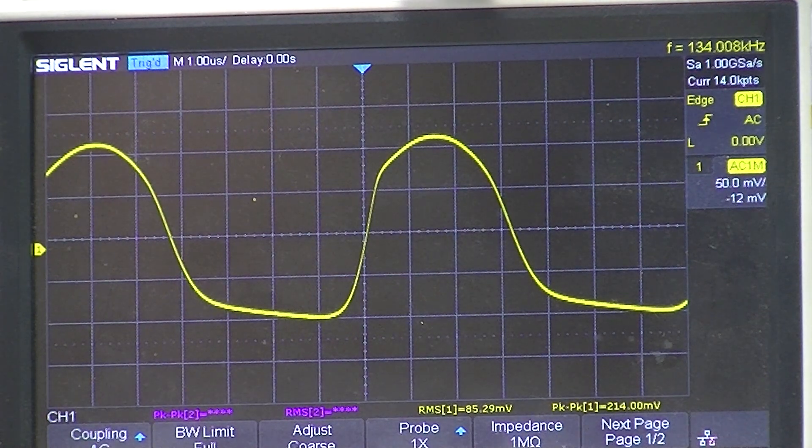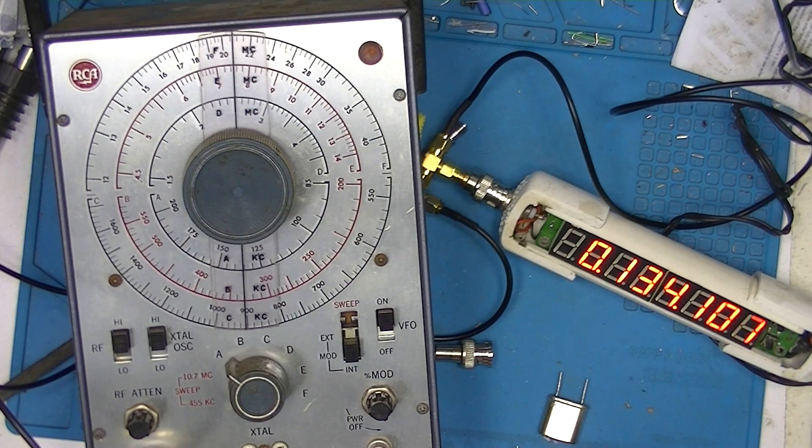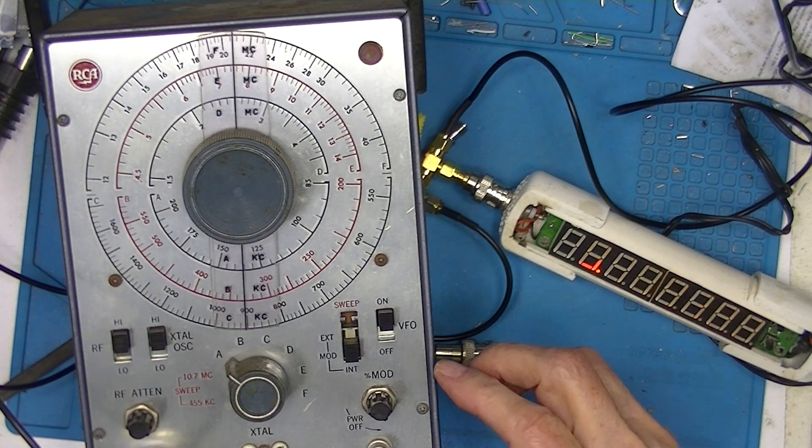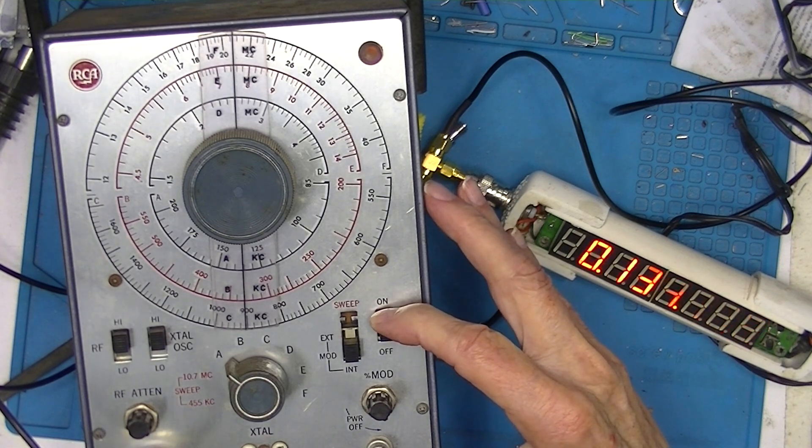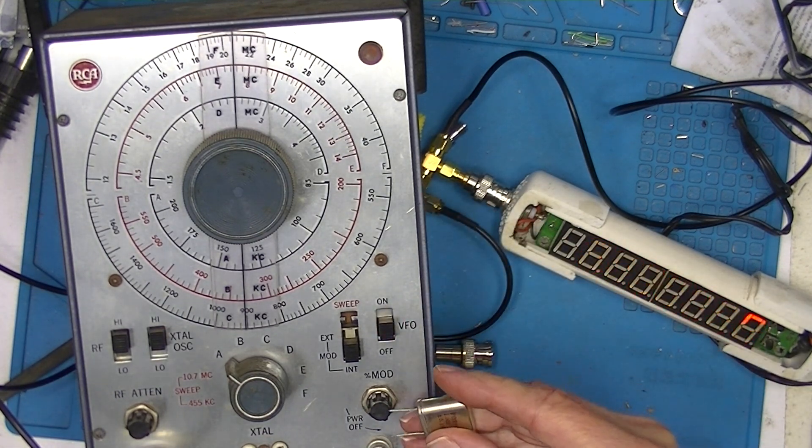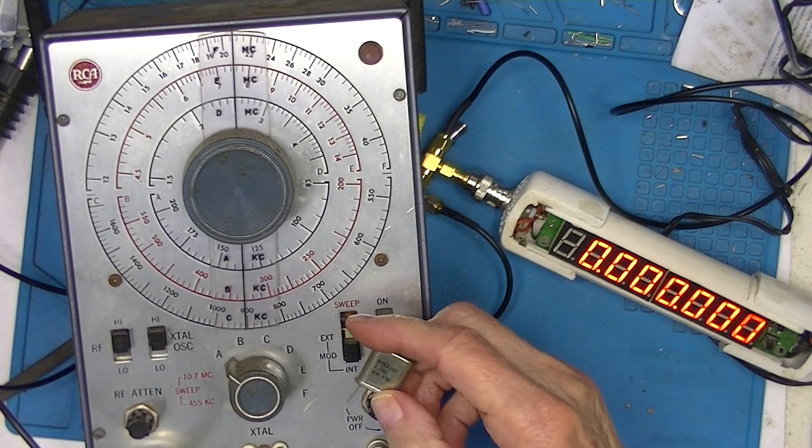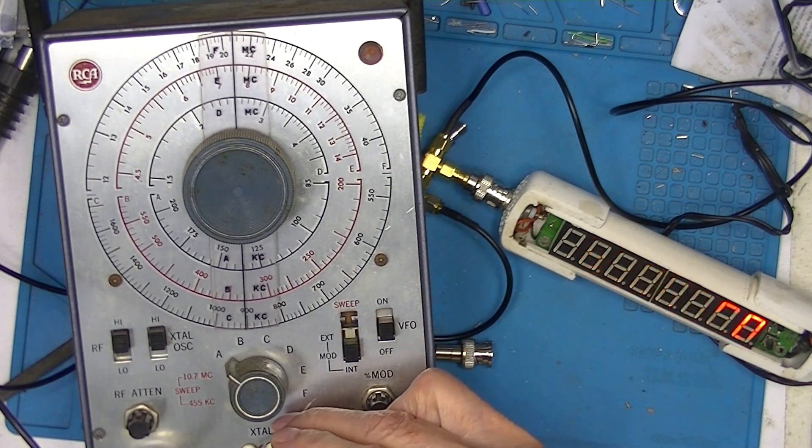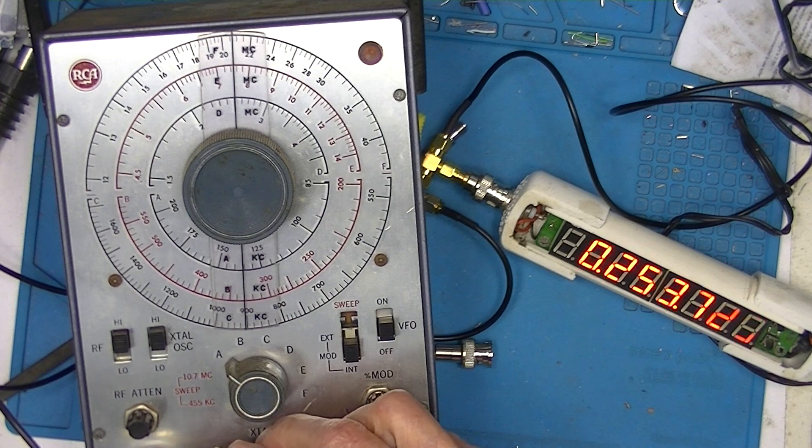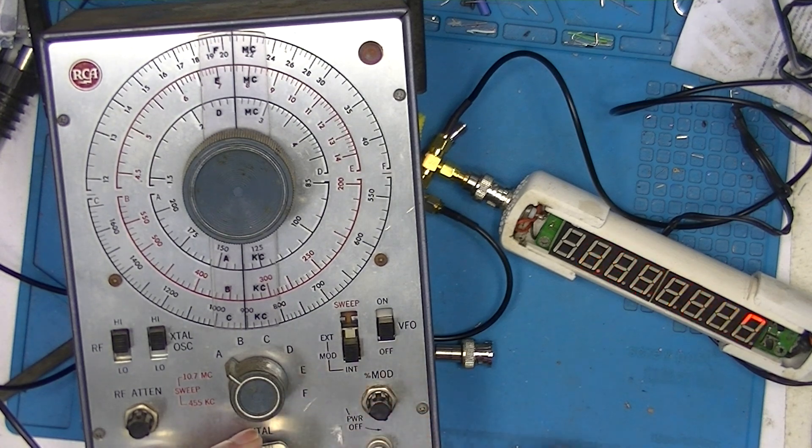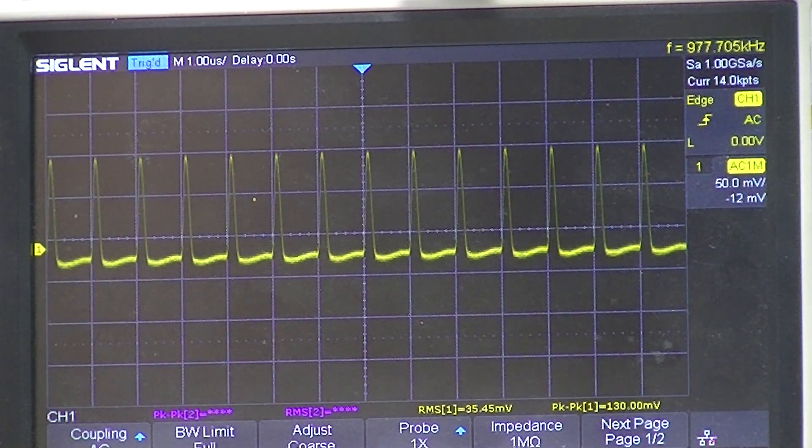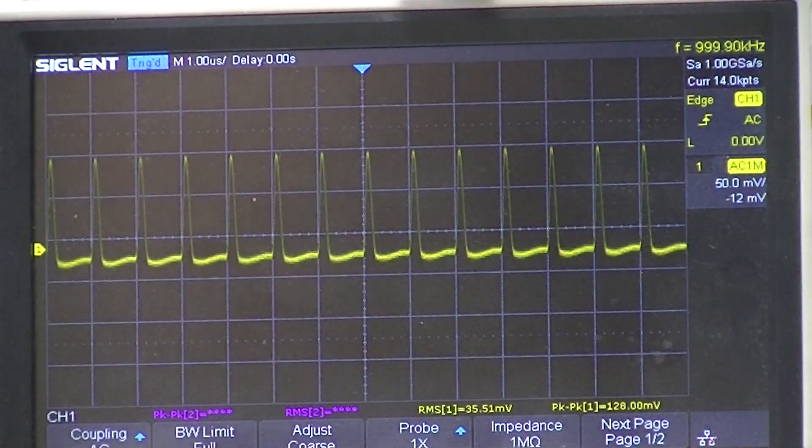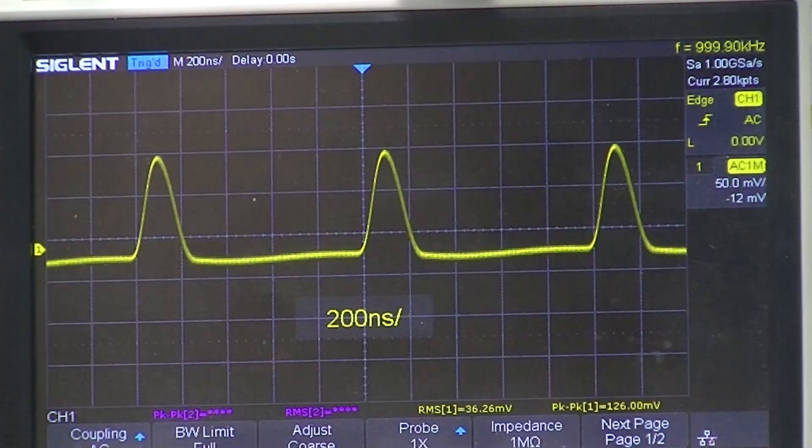So turn the VFO off and I have a one megahertz crystal here. I'll plug it into the crystal socket, and you can see we've got a really weird looking waveform on the oscilloscope.